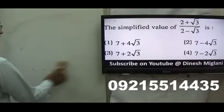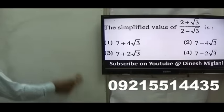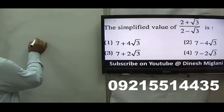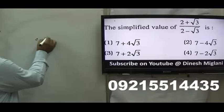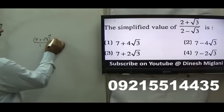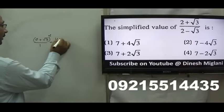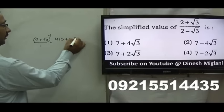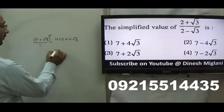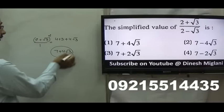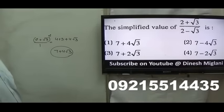Next question: we have to simplify by going for rationalization. So the numerator becomes (2 + √3)² and the denominator becomes 1. That gives 4 + 3 + 4√3 = 7 + 4√3. Hence the first option, 7 + 4√3, is my answer.